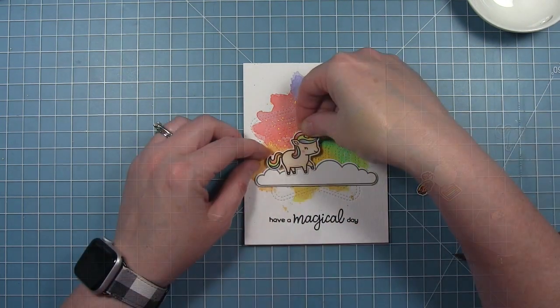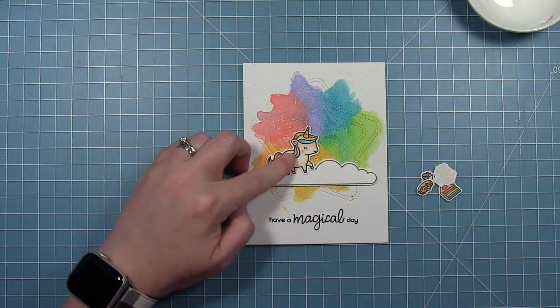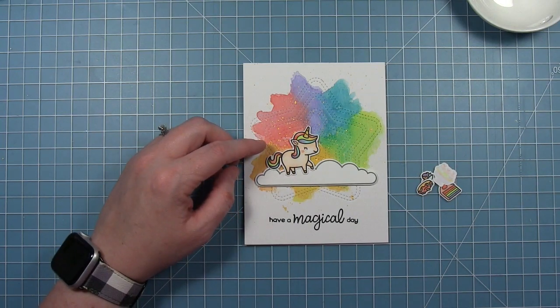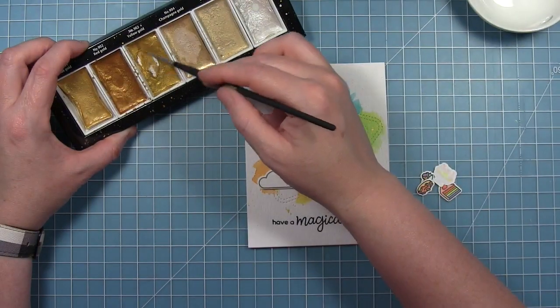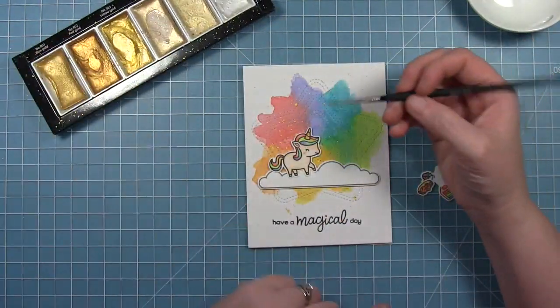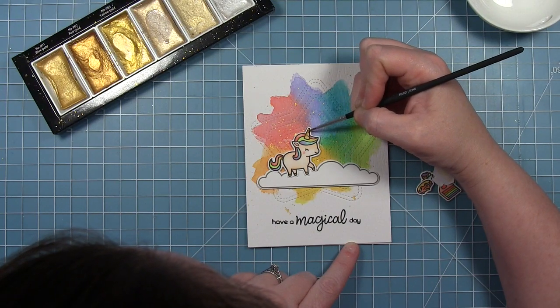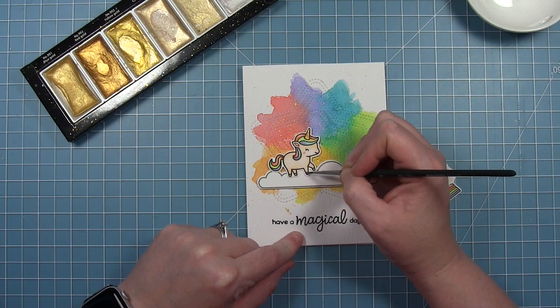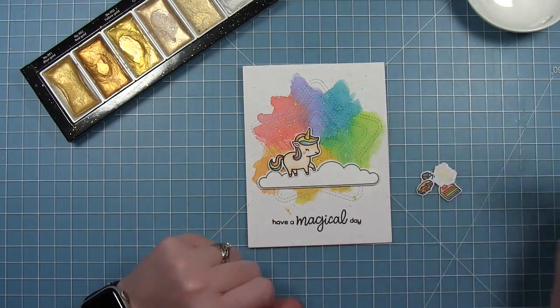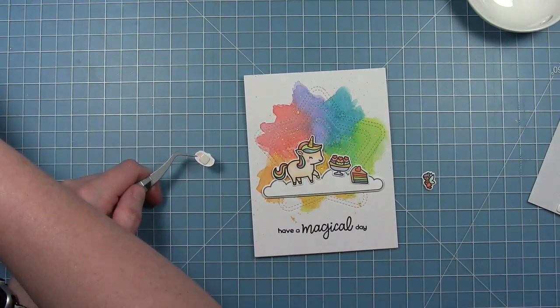I stamped this cloud in narwhal ink and now I'm going to add my little unicorn that I've colored in rainbow colors to match my background. And I decided to add a little bit of gold to her as well so she matches the background so I'm just picking up that same color gold that I used on the background and I'm adding a little bit to her horn and the hooves. So now there's a little bit of shine on my unicorn as well.